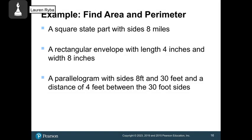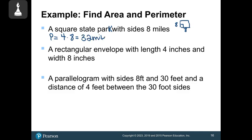A square state park has sides of 8 miles. Perimeter: four sides of 8 miles gives 4 × 8 = 32 miles around the outside. Area: length times width = 8 × 8 = 64 miles squared. Notice that perimeter is always in your unit and area is always in units squared.